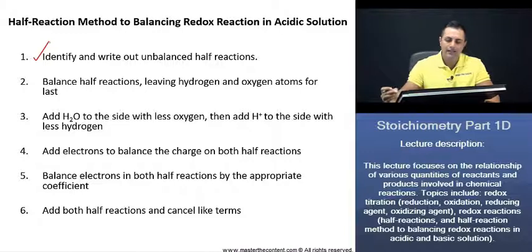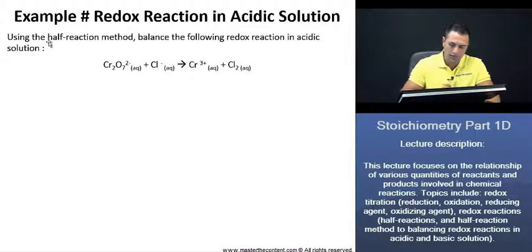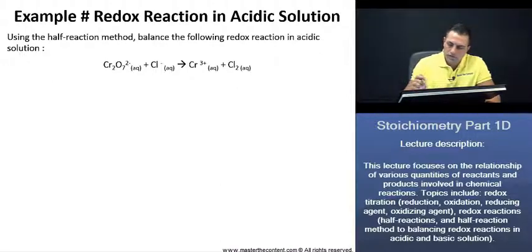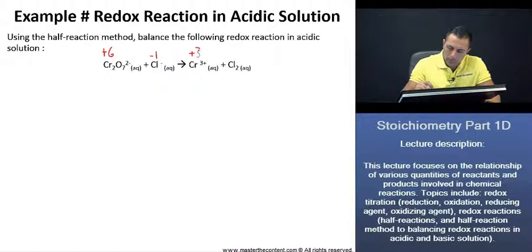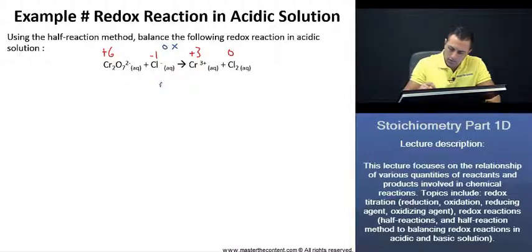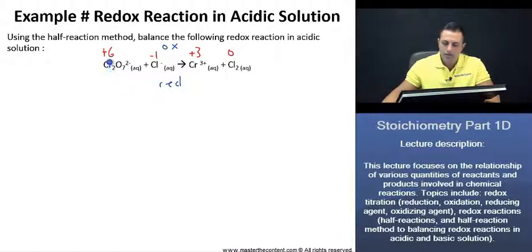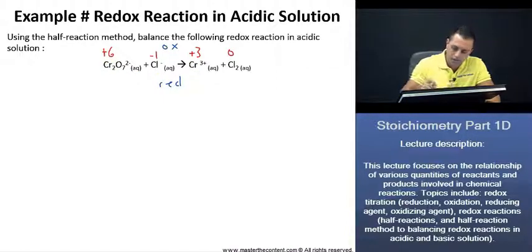Here, we're being asked to identify and write out unbalanced half-reactions. Let's first identify the oxidation and reduction half-reactions. We see that the charge on chromium in the reactant is plus 6, and the charge on chlorine is negative 1. The oxidation number for chromium in the product is plus 3, and the oxidation number on chlorine is 0. One of our reactions is oxidation and one is reduction. Because chromium's oxidation number is going from plus 6 to plus 3, this is our reduction half-reaction.